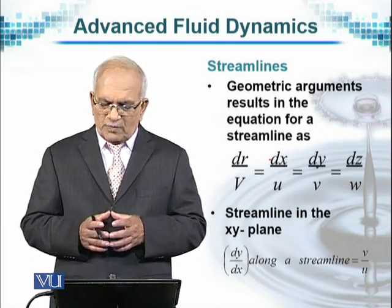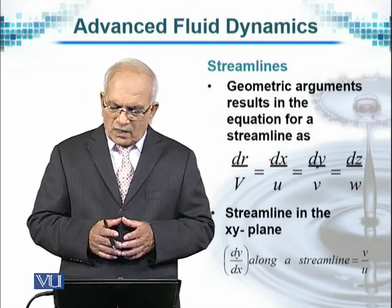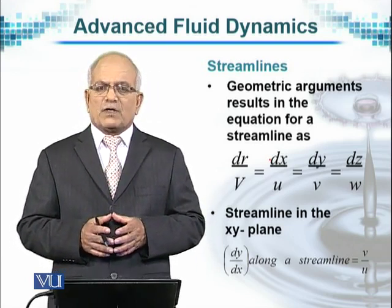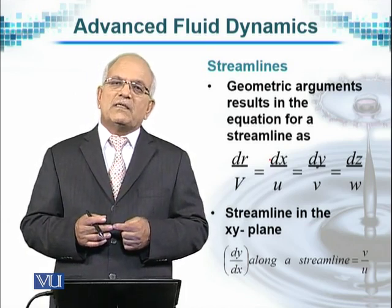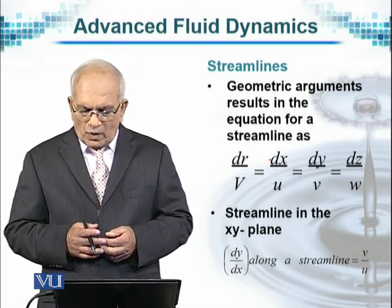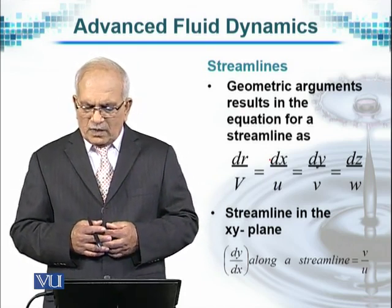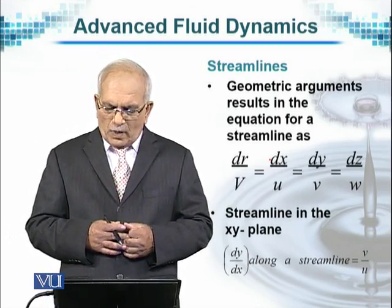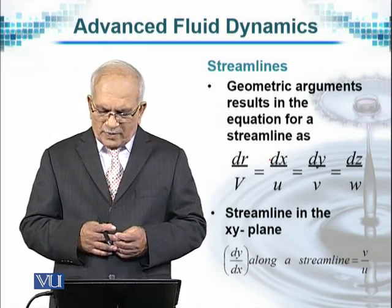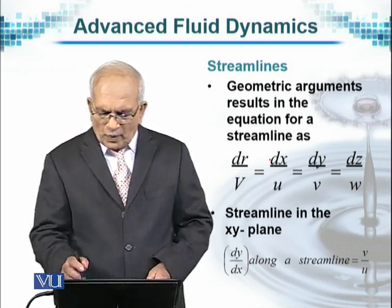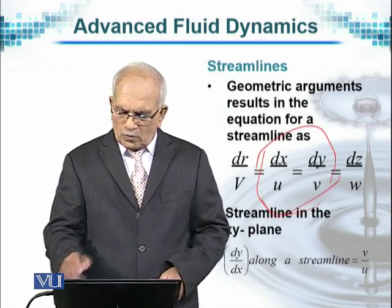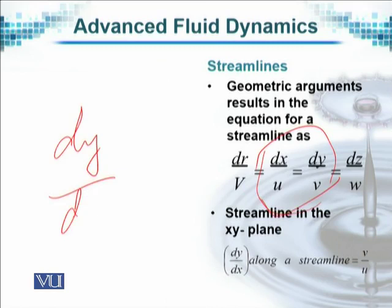The equation for streamlines in fluid flow is represented by dr/v, where r is the position vector and v is the velocity vector. This equals dx/u — where u is the component of the velocity vector in the x direction — equals dy/v, and similarly equals dz/w. For a streamline in the xy plane, dy/dx along a streamline equals v/u, which by simple cross-multiplication gives dy/dx = v/u.